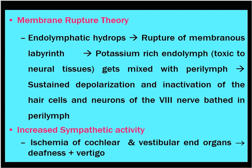The pathology behind an acute attack of Meniere's disease is endolymphatic hydrops. Excess accumulation of endolymph — especially in the saccule, which can reach up to the semicircular canals — causes acute symptoms via two mechanisms: membrane rupture theory and increased sympathetic activity. When there is endolymphatic hydrops, rupture of the membranous labyrinth occurs, releasing potassium-rich endolymph — which is toxic to neural tissues — into the perilymph, leading to sustained depolarization and inactivation of inner ear cells and neurons bathed in perilymph.